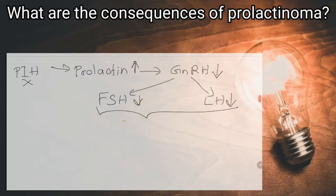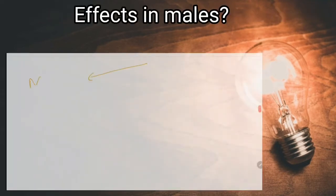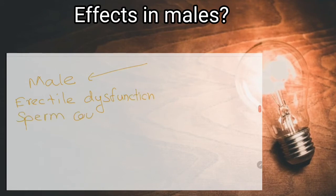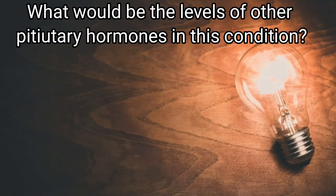What are the consequences of prolactinoma? Subfertility, decreased libido, galactorrhea. Effects in males: erectile dysfunction, decreased sperm count. What about females? They can develop oligomenorrhea or amenorrhea. What would be the levels of other pituitary hormones in this condition? Luteinizing hormone and follicular stimulating hormone levels will decrease.